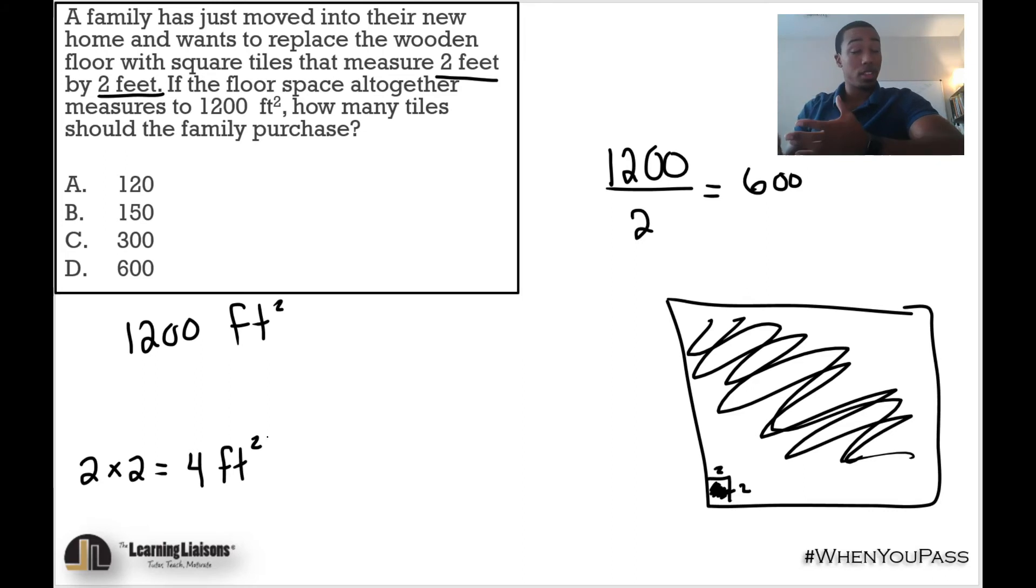In order to get how many tiles we can fit in there, let's go ahead and take that 1200 and divide it by four. So the total area divided by the area of each tile, and then we'll get how many tiles we can fit in there. 1200 divided by four is 300, and so therefore we can fit 300 tiles. I'm not going to go ahead and draw it all out, but yeah, we can go ahead and fit 300 tiles in there.